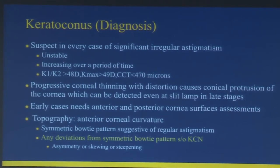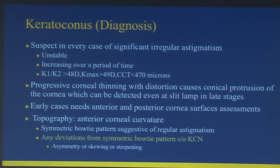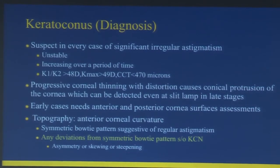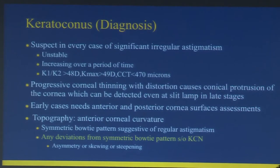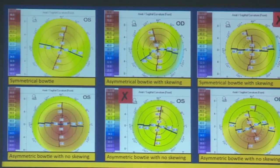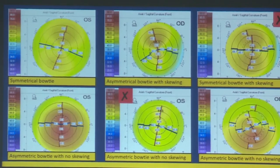With modern techniques and instruments, we mostly rely on topography. Any symmetric bowtie pattern is suggestive of regular astigmatism, and any deviations from this bowtie pattern are suspected to be keratoconus. These pictures show symmetrical and asymmetrical bowtie patterns with and without skewing.